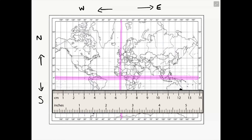I have moved my ruler in line with that location. Now it's a case of using the coordinates on the left and right side of the map to determine what number that ruler is on. As you can hopefully see from either reading the left or the right-hand side of the map, my ruler is directly on 30 degrees south. So that is our starting point — it is 30 degrees south of the equator, and that is the latitude.